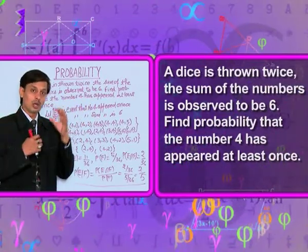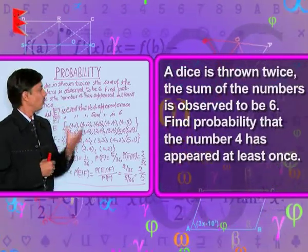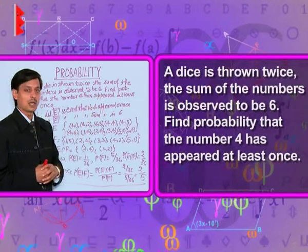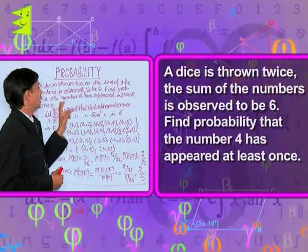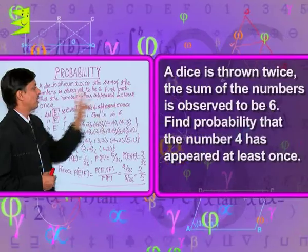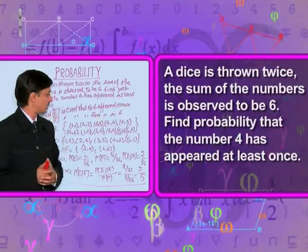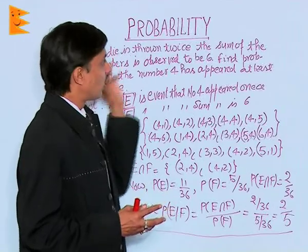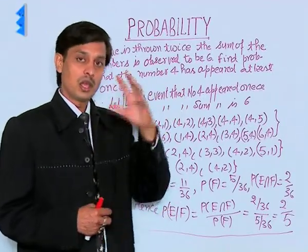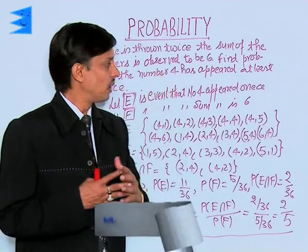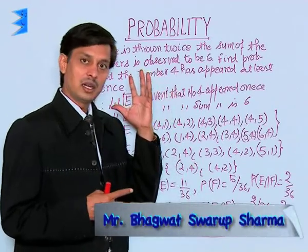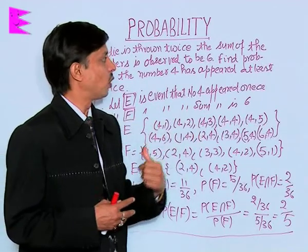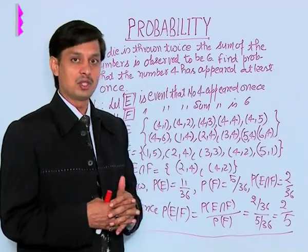We are noticing only those cases where the sum of the numbers is 6. Find the probability that the number 4 has appeared at least once. So the question is, we want to find the conditional probability if at least one of the dice shows 4 and the sum is observed to be 6.